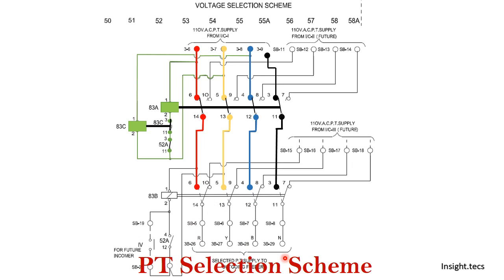Once that contact is closed, it will energize the 83B contact, and the selected PT will again come from incomer two. The third scenario is when both transformer breakers are off and the incomer three breaker is on. Then directly, the PT is already selected for incomer three. The 83A and 83B contactors will not energize, and directly the selected PT from incomer number three will go into the bus further.